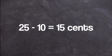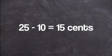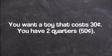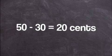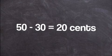If you got 15 cents, you're correct, because 25 cents minus 10 cents equals 15 cents. You want a toy that costs 30 cents and you have two quarters — what would be the change? Well, two quarters is 50 cents, so if we subtract 30 cents from 50 cents, you get 20 cents in change.